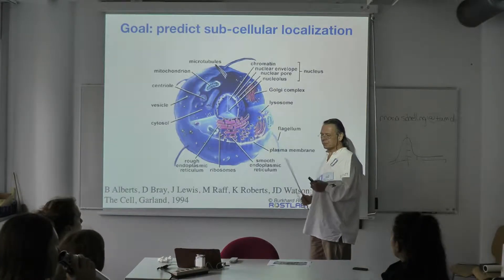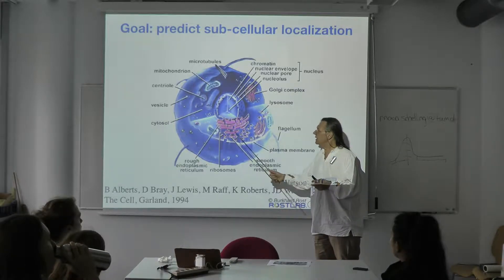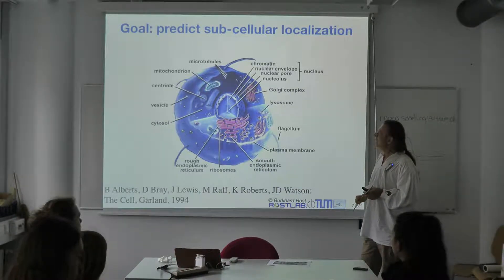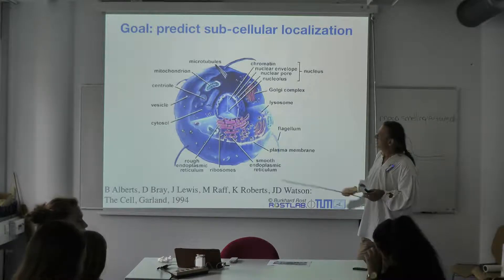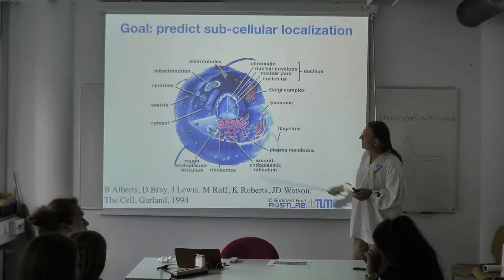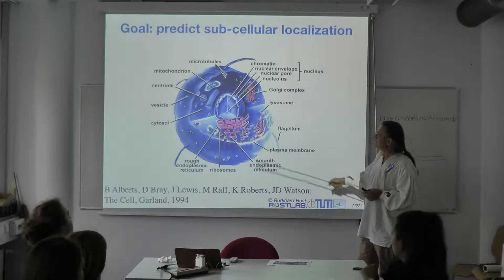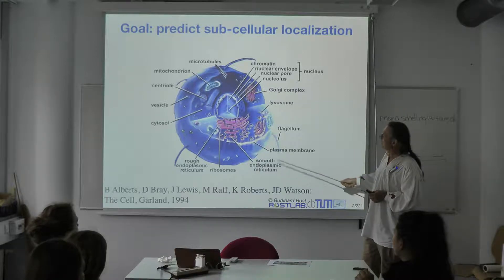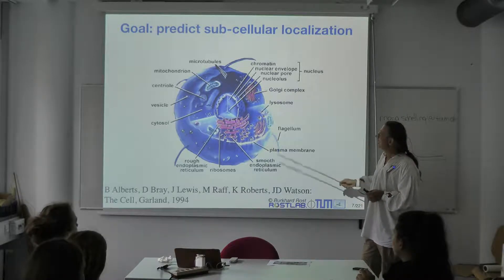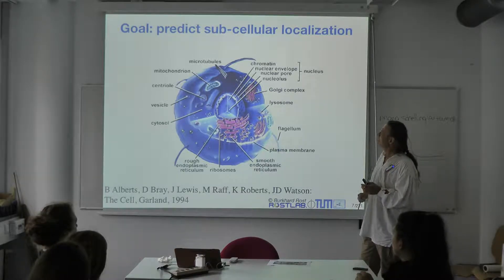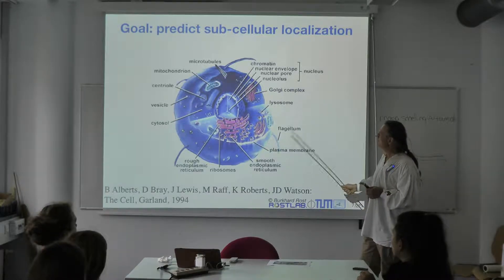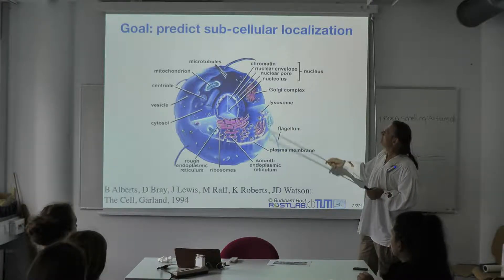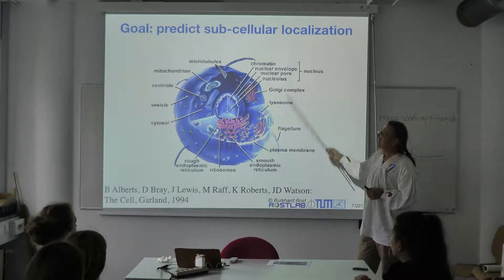Here is a slightly different drawing of a eukaryotic cell. There's the rough endoplasmic reticulum, the ribosomes, the smooth endoplasmic reticulum, the membrane, flagellum — the propeller to move, present not only in bacteria but also in eukaryotes — lysosomes, Golgi complex, and so on.